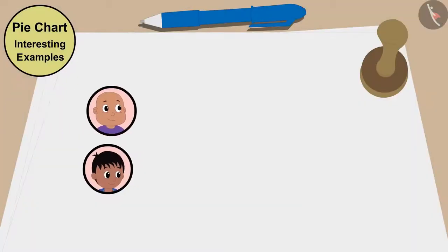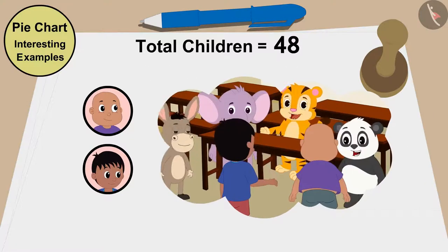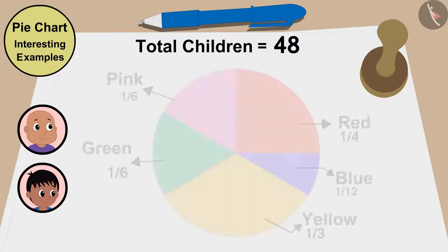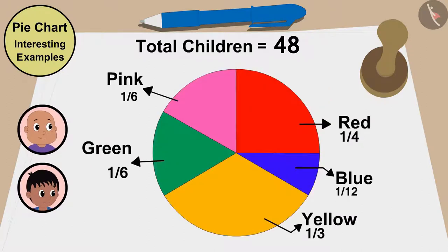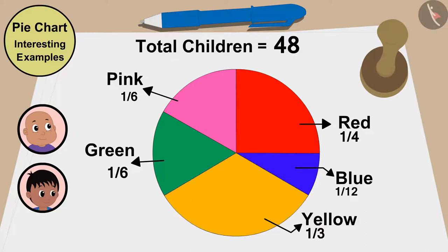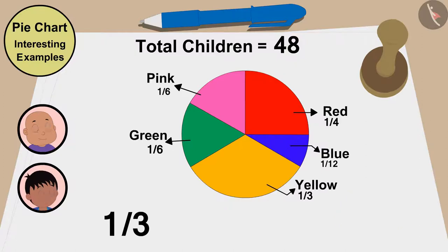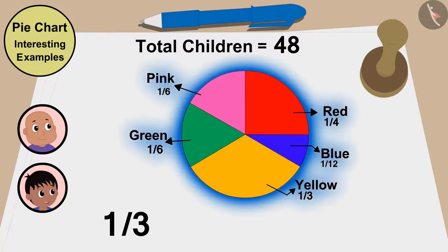Raju and Babloo asked 48 children about their color choice and made a pie chart. After seeing the pie chart, it seems that the largest number of children like yellow — this is one third of the pie chart. But how do we know exactly how many children like this color?